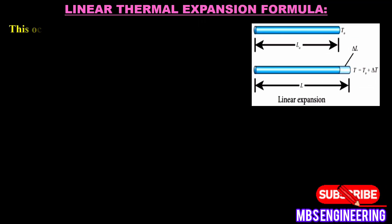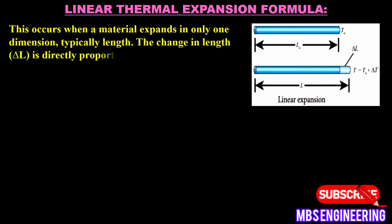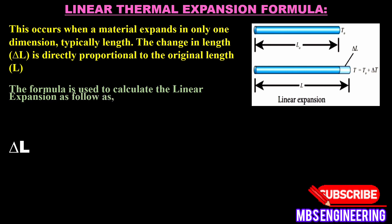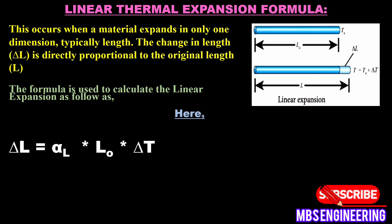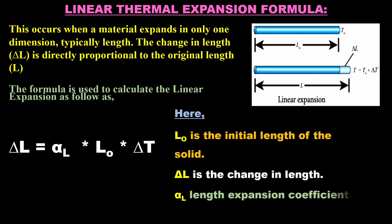Linear thermal expansion occurs when a material expands in only one dimension, typically length. The change in length, delta L, is directly proportional to the original length. The formula is: delta L = alpha_L × L₀ × delta T, where L₀ is the initial length of the solid, delta L is the change in length, alpha_L is the length expansion coefficient, and delta T is the temperature difference.